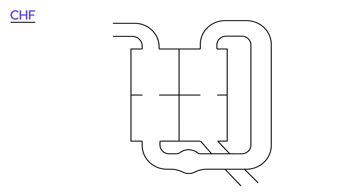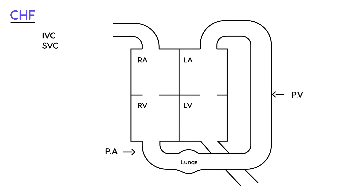Here is a diagram of the heart. This is the inferior vena cava, superior vena cava, right atrium, left atrium, right ventricle, left ventricle. This is the pulmonary artery, the lungs, the pulmonary vein, and this big one is the aorta.